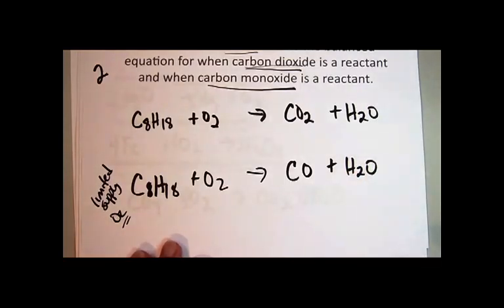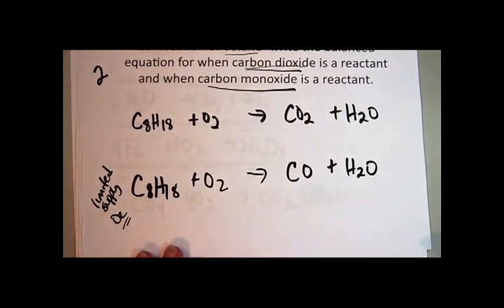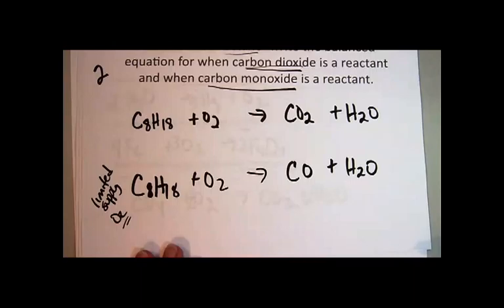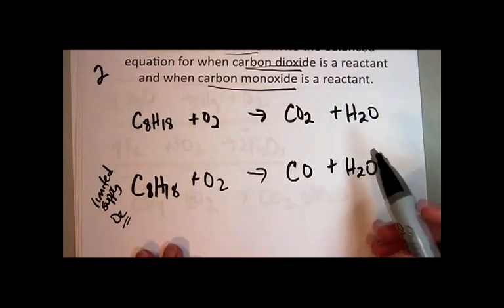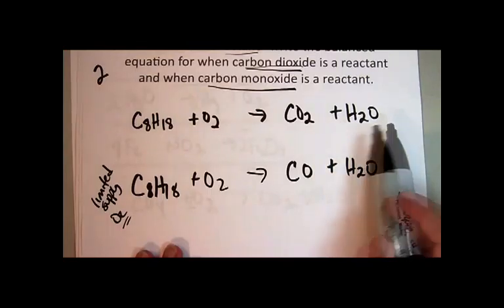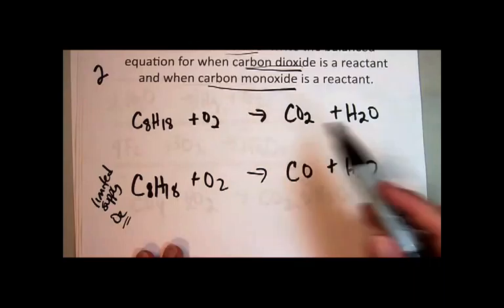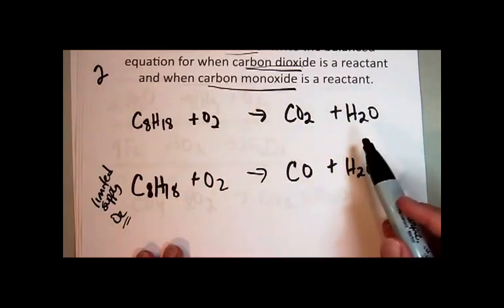And so what you need to do there is balance those equations. When you get to the situation where you have larger molecules, bigger numbers, sometimes it gets a little bit tricky, especially if you have an odd number, as you do in this case. You have three oxygens on this side and two on that side, and you've got eight carbon and 18 hydrogen and all this craziness.